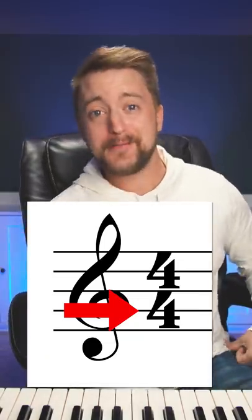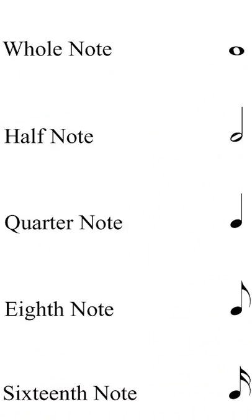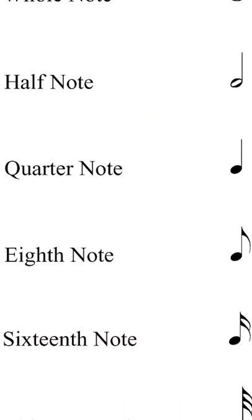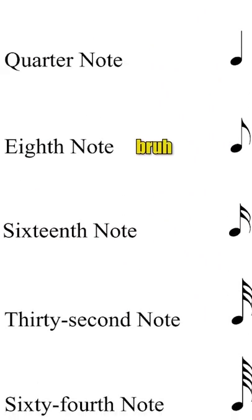We're counting spoons? That's what the handy dandy bottom number's for. This is going to tell us exactly what we're counting, and the different numbers refer to different divisions of notes. We have whole notes, half notes, quarter notes, 16th notes, 32nd notes, 64th notes, 128th notes.